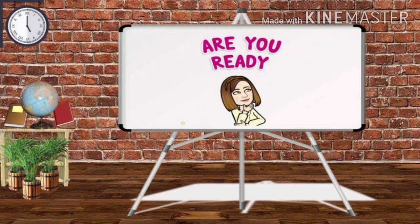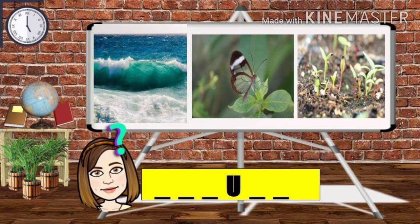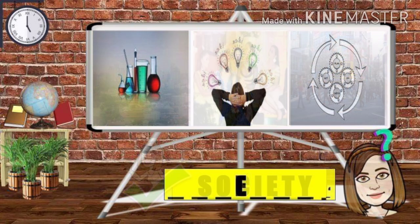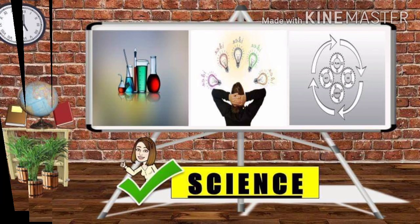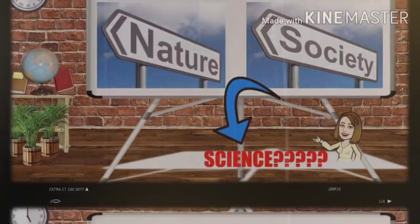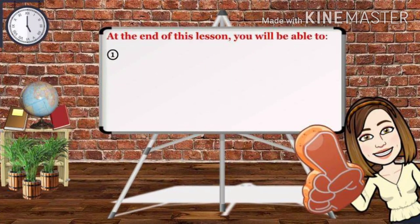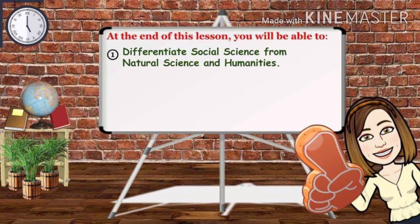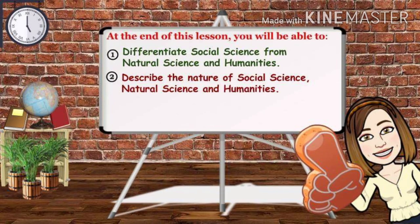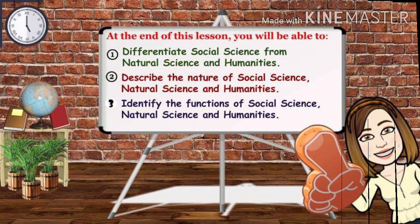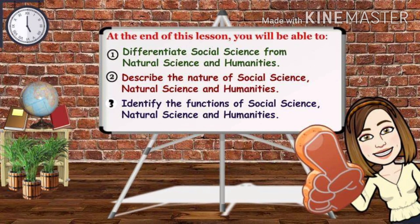Are you ready for our next lesson? Try to guess these pictures. The first picture is all about nature, the second is about society, and the third is about science. Do you think nature and society are related to science? Let's find out. As we discuss the lesson, you will be able to differentiate social science from natural science and humanities, describe the nature of each, and identify their main functions.